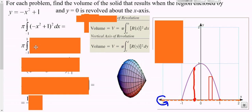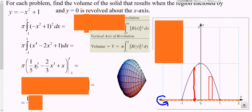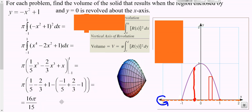I would leave the pi in front, go ahead and FOIL that, then easily integrate each piece. Now that I have each piece integrated, I just have to evaluate it — plug in 1 minus what you get when you plug in negative 1. In this case we would get 16 pi over 15.